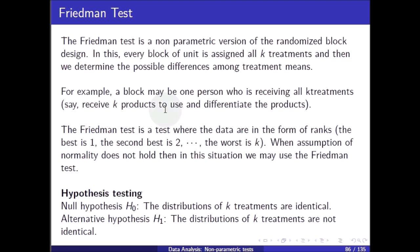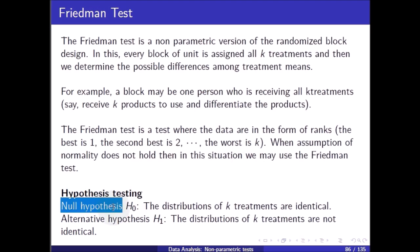The Friedman test is a test where the data are in the form of ranks: the best is one, the second best is two, and the worst is k. When the assumption of normality does not hold, in this situation we may use the Friedman test.